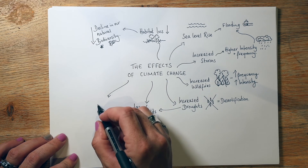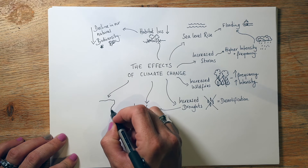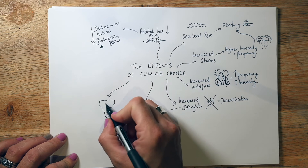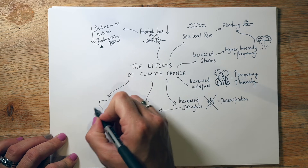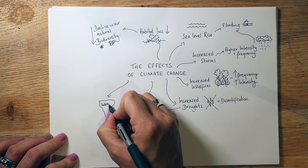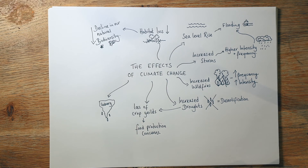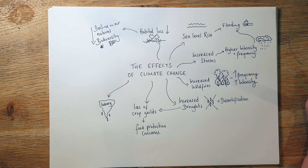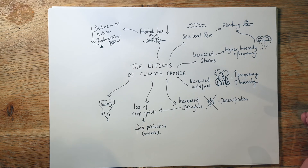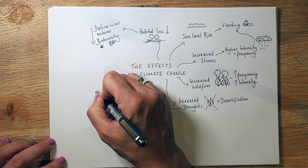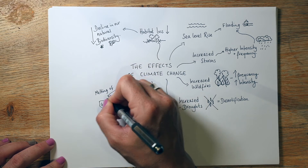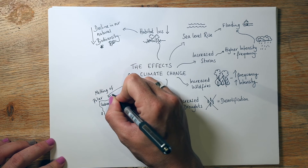Another effect that really gets the headlines is the melting of icebergs — let me draw an iceberg there. The melting of icebergs into the sea, and basically the melting of the polar ice caps themselves — those huge areas of ice that exist in the Arctic and Antarctica, the massive frozen glaciers, those frozen rivers of ice, and Greenland — all these amazing places are basically melting. So: melting of polar landscapes.